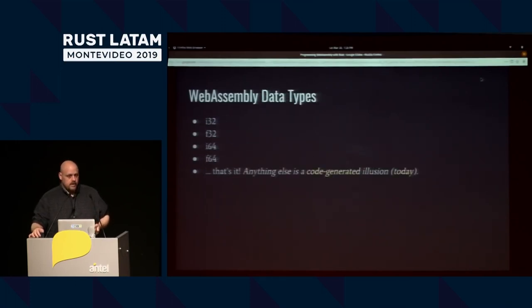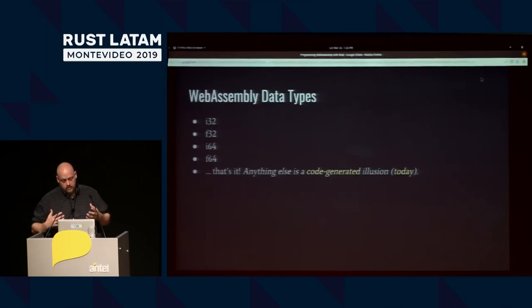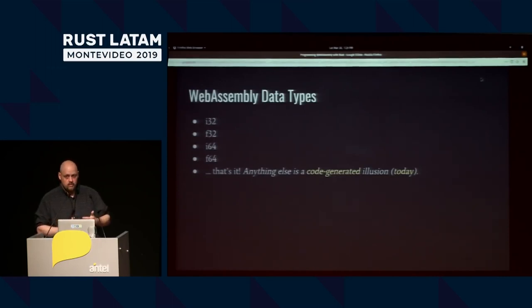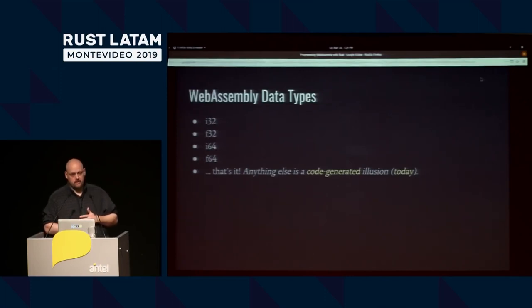WebAssembly has four data types, and that's it. I want to point out that all of the other fanciness we see sitting on top of WebAssembly is smoke and mirrors — it's all generated code. Being able to compile Doom and run it in WebAssembly, while fun and a great way to spend a day at work, is all code generation. There's nothing really WebAssembly about it.